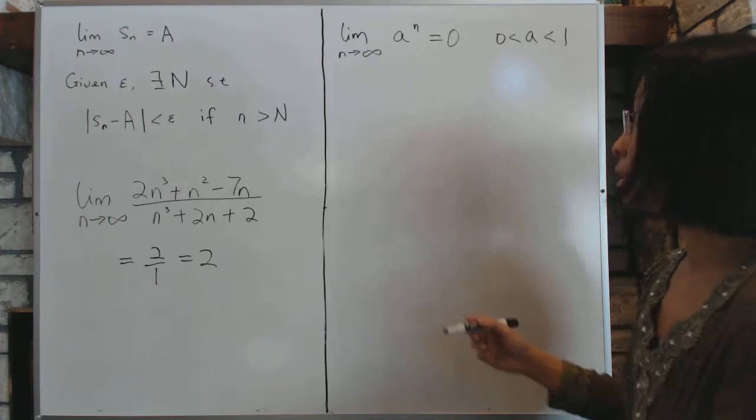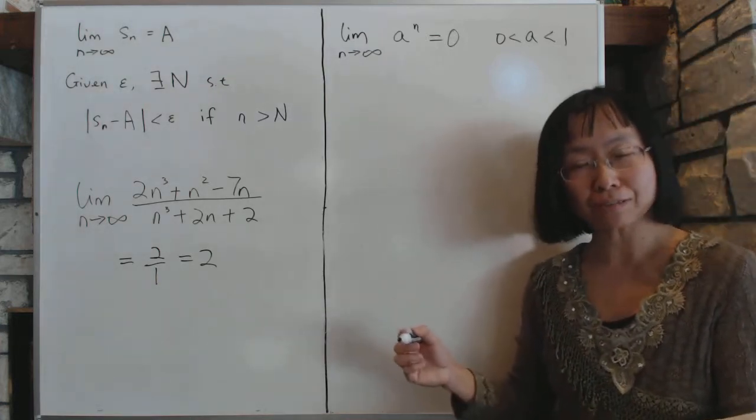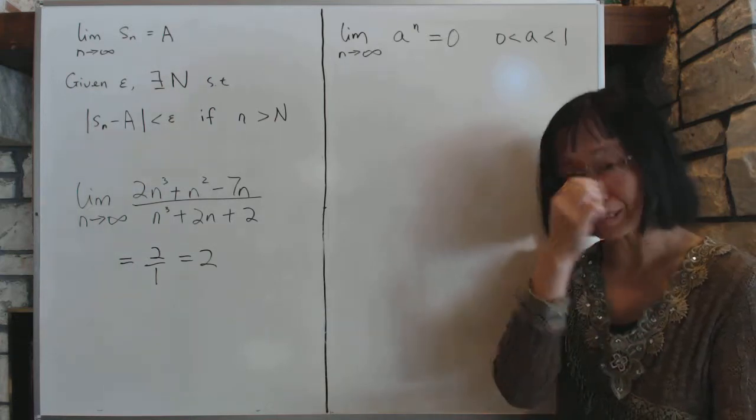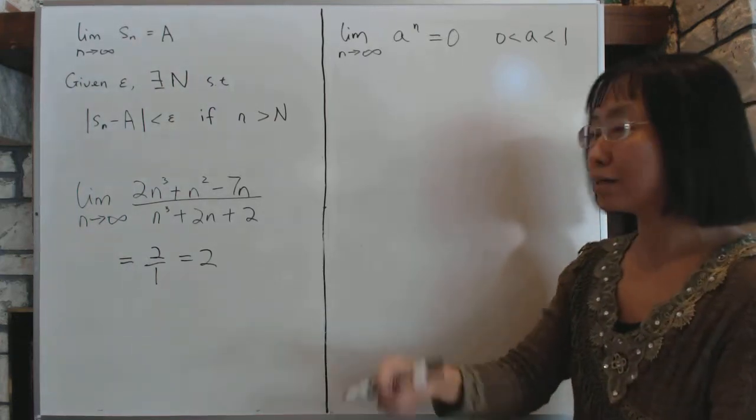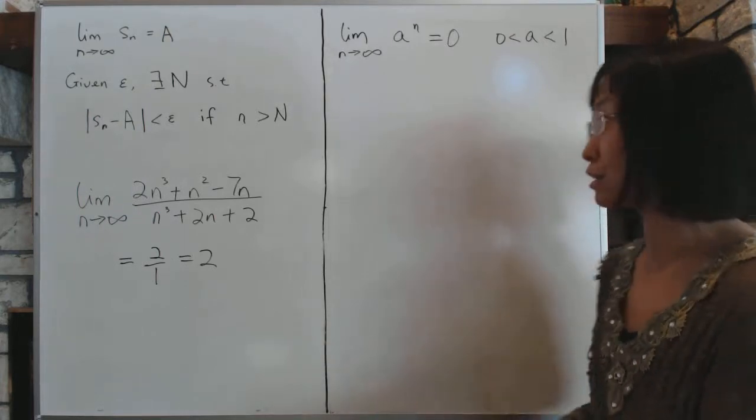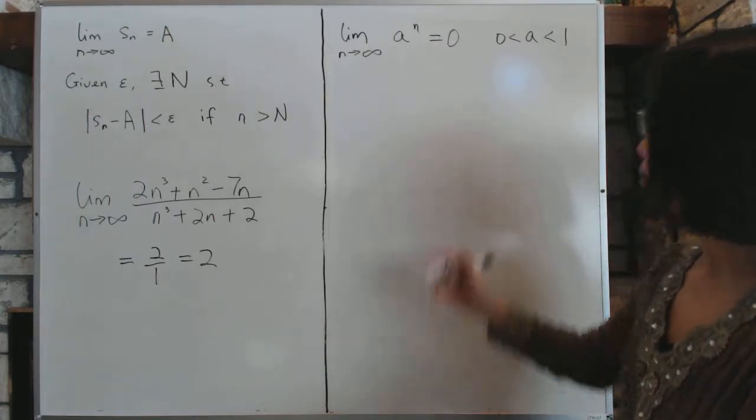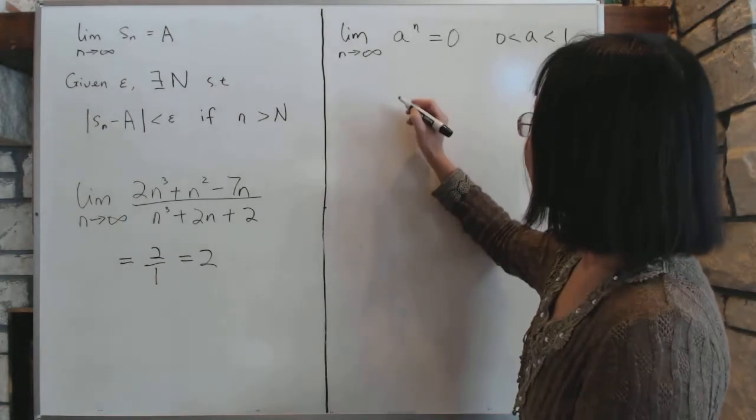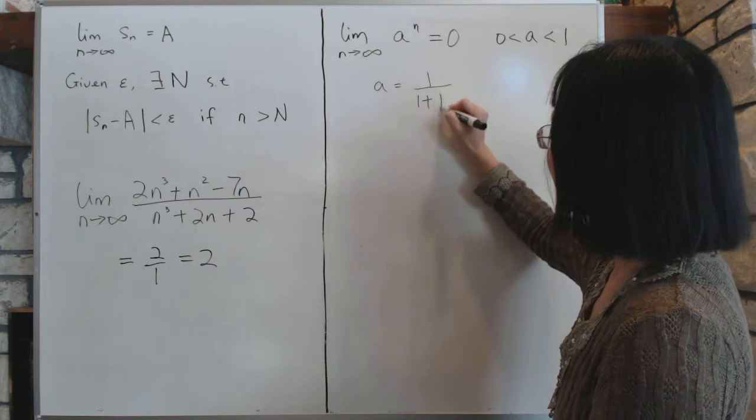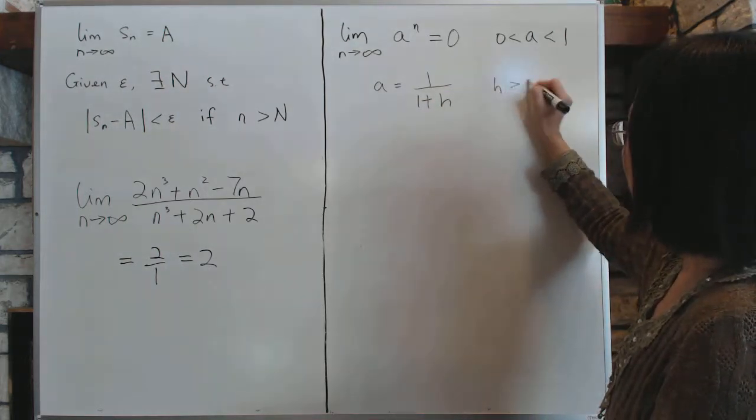Actually, we're going to pull a trick. In sequences, it's very common to have to pull tricks out of the bag in order to prove some kind of a sequence convergence. And the only way to really learn these tricks is just by reading about them and memorizing each trick. So here's this problem. We're going to use two tricks. The first one we're going to do is set a equal to 1 over 1 plus h, where h is bigger than 0.